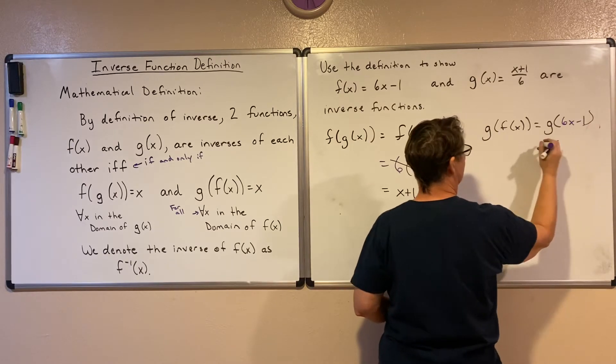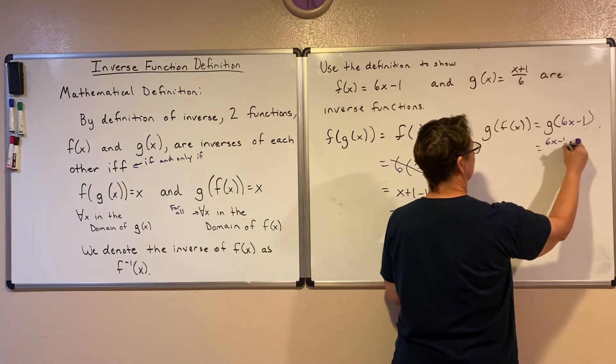I'm going to rewrite it. Instead of writing f(x), I'm going to write it as g(6x-1), because f(x) is equal to 6x-1. I'm now going to input this into my g function. So everywhere I see an x in my g function, I'm just going to replace it with 6x-1.